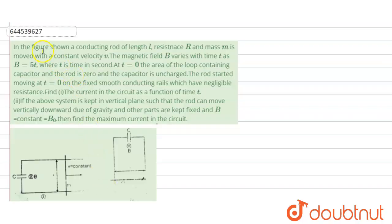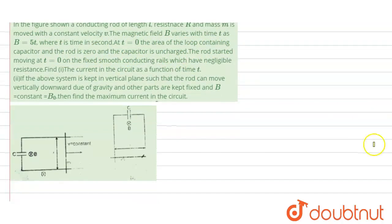Hello everyone, let us start with our question. In this question, there is a figure showing a conducting rod of length L, resistance R and mass M, which is moving with a constant velocity V. The magnetic field is varying, given as B = 5t, where T is in seconds. At T equals to zero, the area of the loop containing the capacitor and the rod is zero, and the capacitor is uncharged. The rod started to move at T equals to zero on the fixed smooth conducting rails which have negligible resistance.